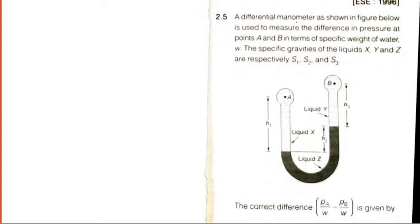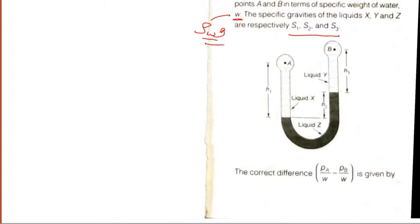Question number 5. The differential manometer as shown in the figure is used to measure the difference in pressure at point A and B in terms of specific weight of water. The specific gravities of the liquids are given as S1, S2, S3. We need to find out P_A by rho G minus P_B by rho G. First we have to take datum here because pressure at different levels with different liquids, we cannot take this datum. So point 1, point 2.